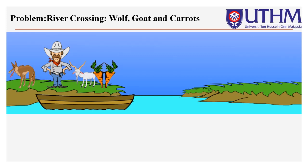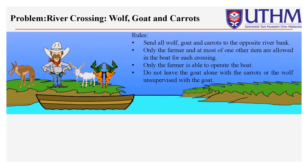As for my example question, which is a river crossing with a wolf, goat, and carrots. The rules are we need to send all wolf, goat, and carrots to the opposite river bank. Only the farmer and at most one item or object are allowed in the boat for each crossing, because only the farmer is able to operate the boat. But we do not leave the goat alone with the carrots, or the wolf unsupervised with the goat.